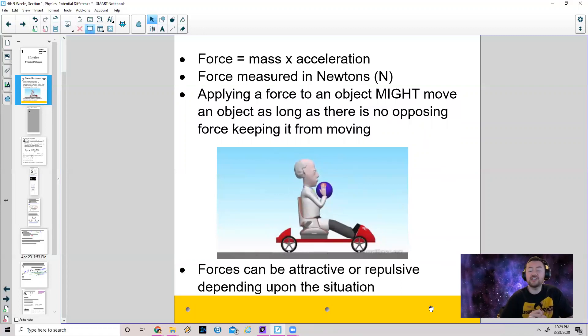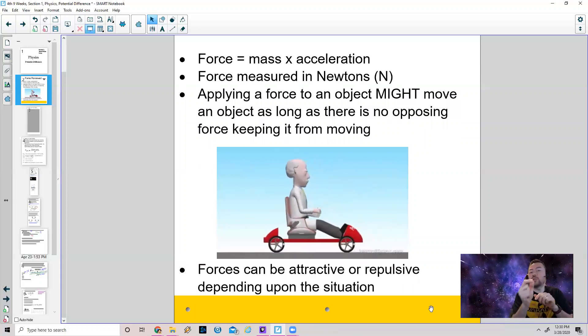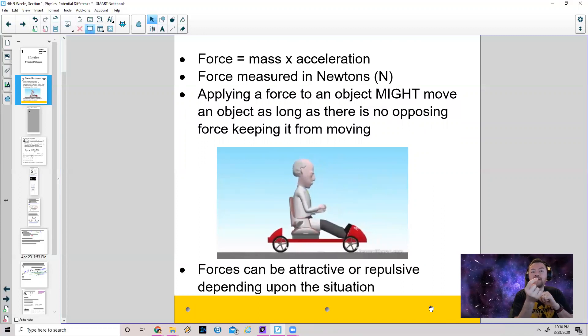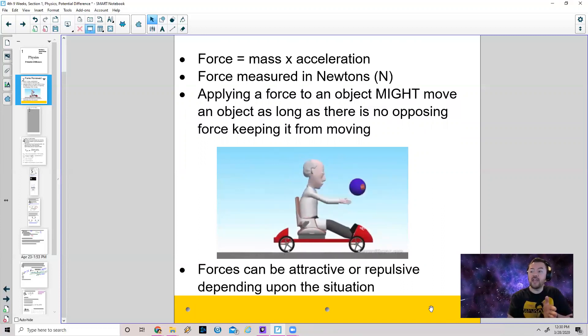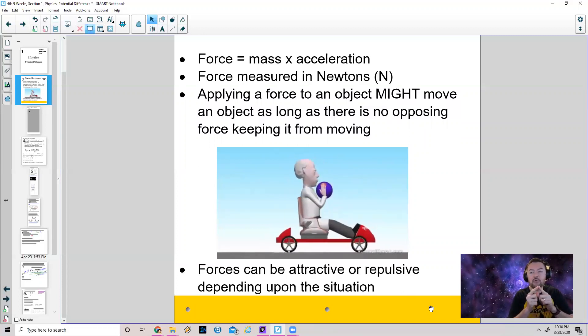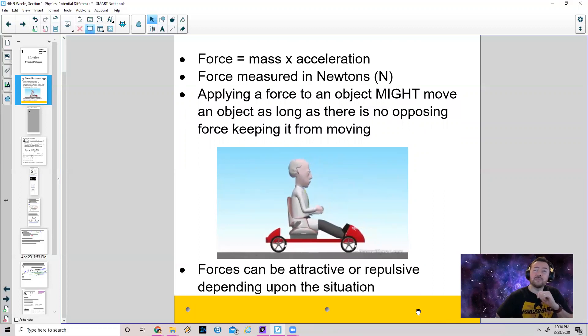When I touch that cup, the atoms in my fingertips and in the cup, they never actually physically touch. Instead there is a repulsive force that's occurring because the nuclei of the hydrogens and carbons and oxygens and whatever little elements are making up my fingers, well those nuclei are positive. And when I touch this cup, their nuclei are positive as well. You put two positive things together, they should repel each other. So a force can be an attractive force or a repulsive force. And by pushing on the box I'm absolutely applying a repulsive force.